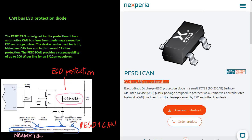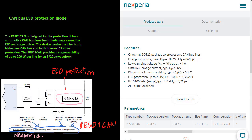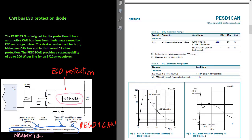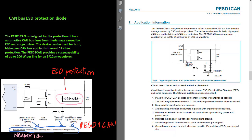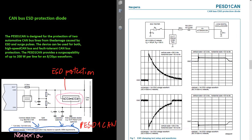The PESD1 CAN is designed for the protection of two automotive CAN bus lines from the damage caused by ESD and surge pulses. The device can be used for both high-speed CAN bus and fault-tolerant CAN bus protection. The PESD1 CAN provides a surge capability of up to 200 Watts per line for an 8/20 microseconds waveform.